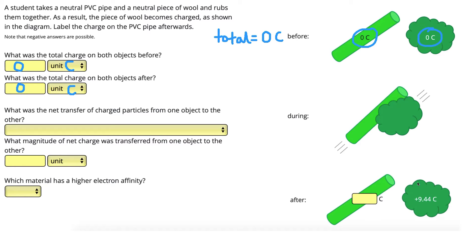Looking at what happened, we end up with positive 9.44 coulombs on the wool. Therefore, the rod must have the same charge but negative in order for them to add up to give us 0 still, since our total at the end also needs to equal 0 coulombs. So our charge on the rod after is going to be negative 9.44. Make sure you include that negative sign — that's important here.